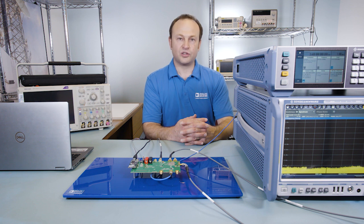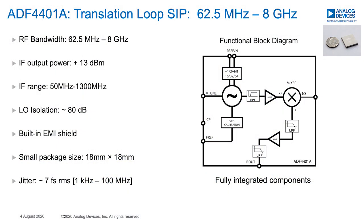Let's summarize the features of ADF4401A. The RF bandwidth is 62.5 MHz to 8 GHz. The IF output power is +13 dBm, and the IF range is from 50 MHz to 1300 MHz. LO isolation is about 80 dB. There is a built-in EMI shield, and the package size is 18 mm by 18 mm. The jitter is about 7 femtoseconds RMS integrated in the 1 kHz to 100 MHz range.